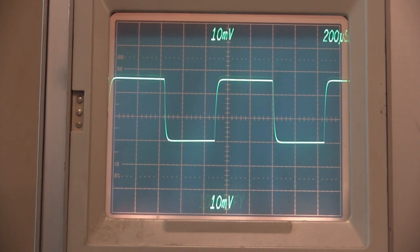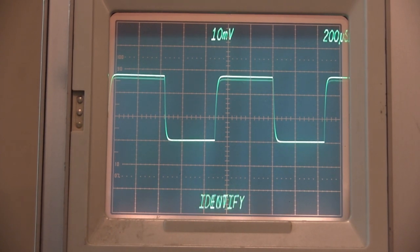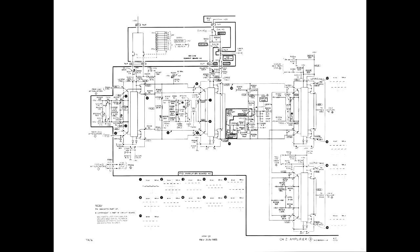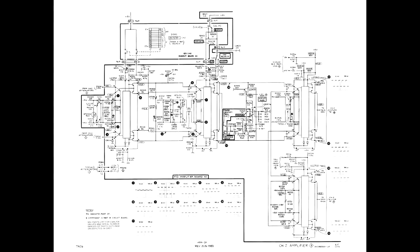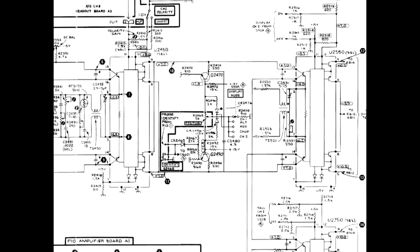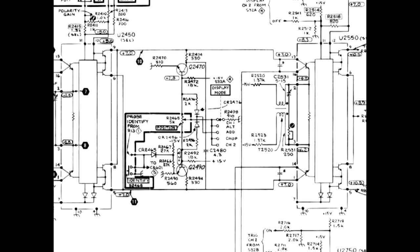Identity actually increases the gain slightly instead of moving the trace. Since it was a position related problem, I assumed the cause was between U2450 and U2550.